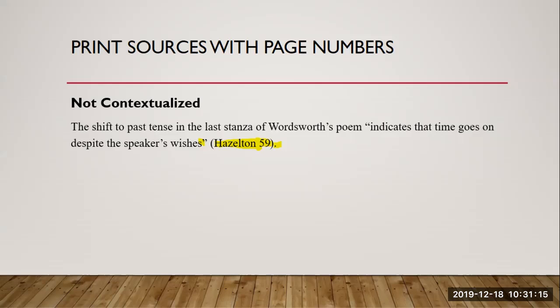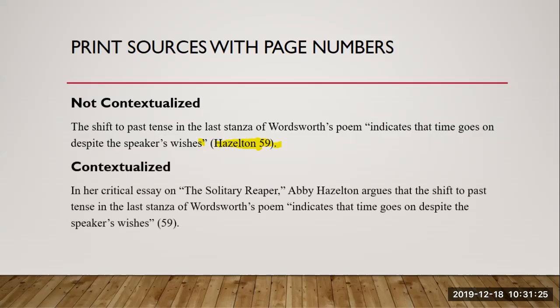But what if you have contextualized the source name within an attribution? In this case, if there is no doubt which source you are quoting, then all you need in the p-sit is the page number — just the number, like this. Here, the writer has mentioned the author's name in the introduction to the quote, so including her name again in the p-sit is not necessary and would actually be redundant.